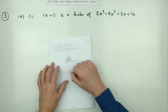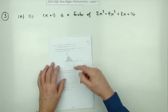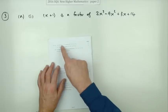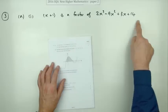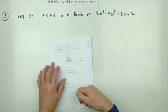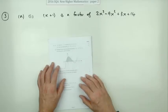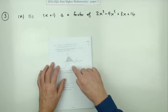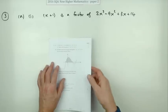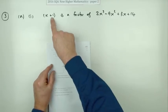Number three from Paper 2 of the 2016 Higher Maths — ten marks here in two parts. The first part is a standard cubic expression to factorize or solve, and the second part is an integration involving the exact same expression. But the first part, for two marks, is to show that x plus one is a factor.